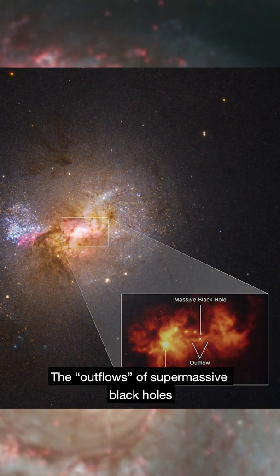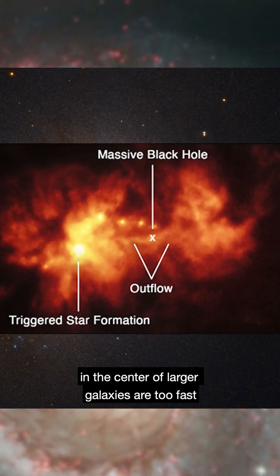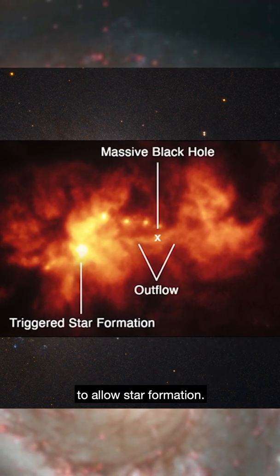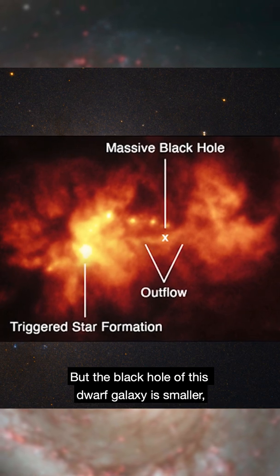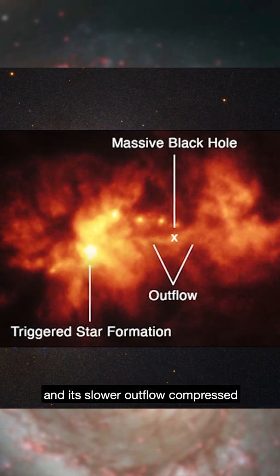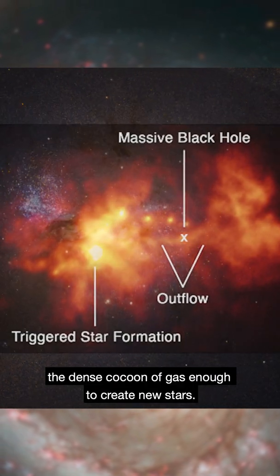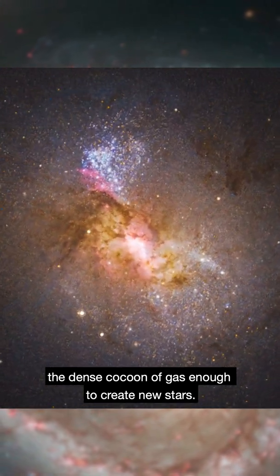The outflows of supermassive black holes in the center of larger galaxies are too fast to allow star formation. But the black hole of this dwarf galaxy is smaller, and its slower outflow compressed the dense cocoon of gas enough to create new stars.